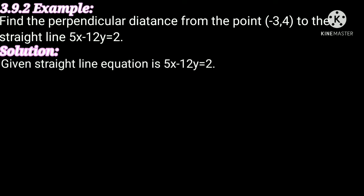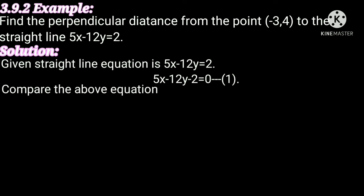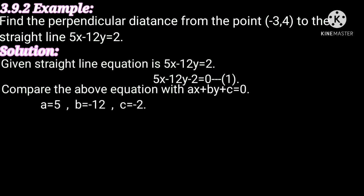Now we will solve the problem. Given straight line equation is 5x minus 12y equal to 2. From this, 5x minus 12y minus 2 equal to 0. This is equation number 1. Comparing with ax plus by plus c equal to 0, then a equal to 5, b equal to minus 12, and c equal to minus 2.